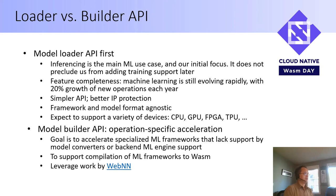For the model builder API, the main advantage is that you can provide operation-specific acceleration. This is very useful for some machine learning frameworks that lack support by model converters or backend machine learning engines. If you want to compile a specialized machine learning framework completely into WebAssembly and have specific operations accelerated by hardware, the builder API would be very useful. We think we can look into supporting that usage in the second phase of WASI-NN, potentially leveraging work already done by the WebNN team.